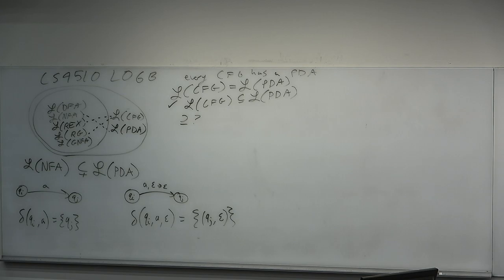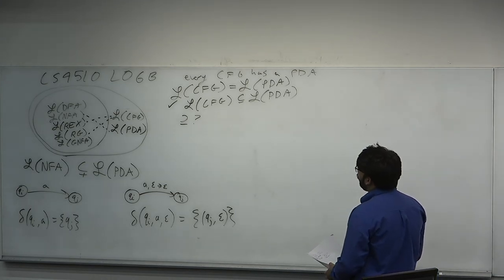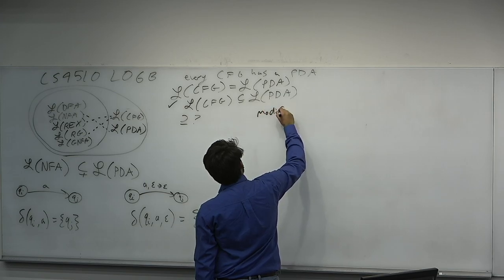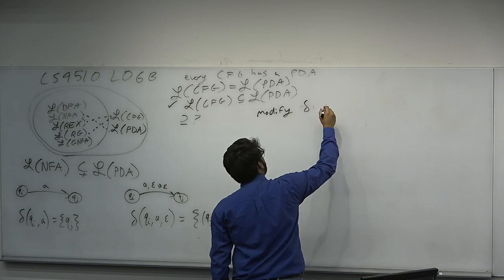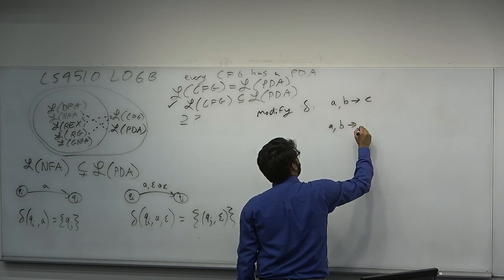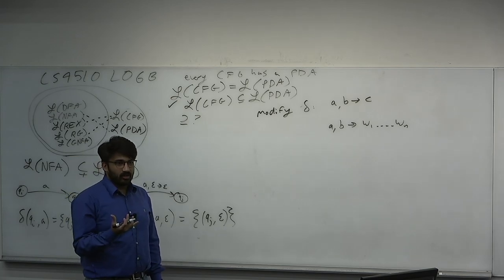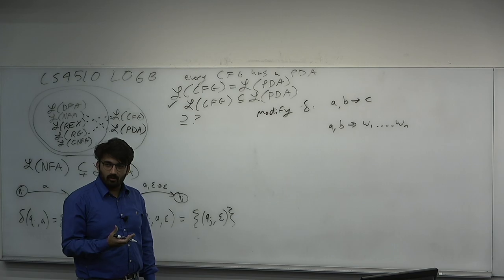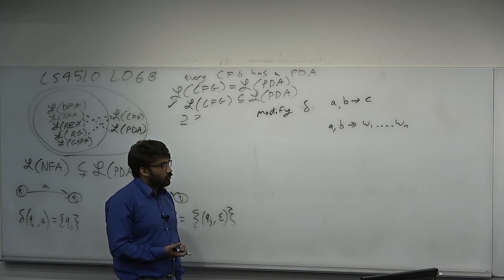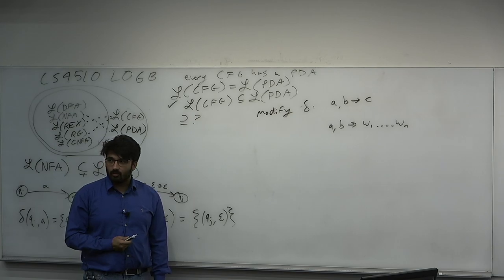Before we get into the proof of converting a context-free grammar into a PDA, we will generalize the definition of a pushdown automaton. Instead of reading A, popping B, and pushing C, we're going to allow it to read an input, pop a single symbol, and then push a long word. We won't allow popping a long string, but we can modify the transition function so it pushes an entire string.